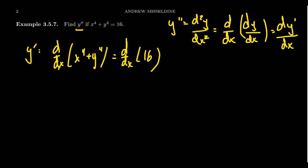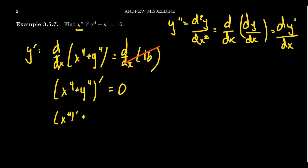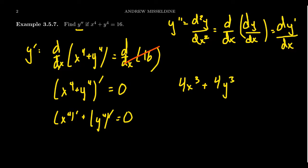On the right-hand side, the derivative of a constant equals zero, so that disappears. On the left-hand side, because we're taking the derivative of a sum, we can differentiate each term separately: x to the fourth prime plus y to the fourth prime equals zero. With respect to x, the derivative of x to the fourth by the power rule is 4x cubed. For y to the fourth, the power rule gives 4y cubed, but the chain rule also applies — we need to multiply by y prime, which is dy/dx. This all equals zero.